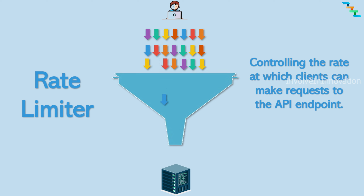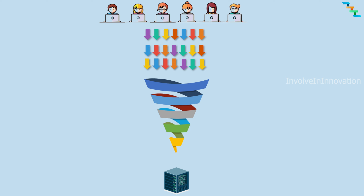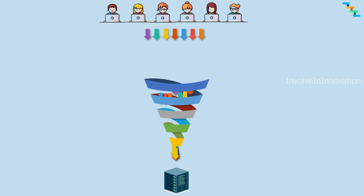Rate limiting in APIs involves controlling the rate at which clients can make requests to an API endpoint. This is typically done by imposing restrictions on the number of requests a client can make within a specific time window such as a minute, hour, or day. Rate limiting is implemented to ensure that API servers remain available, responsive, and secure while also preventing abuse or excessive usage of a particular endpoint.